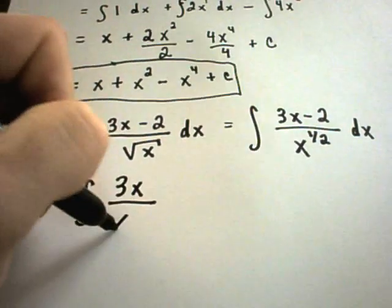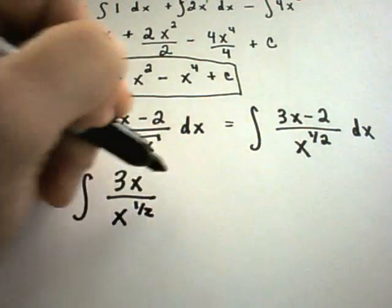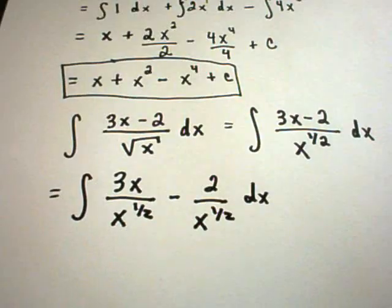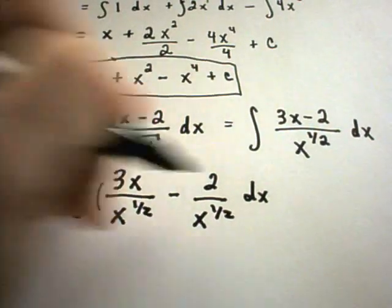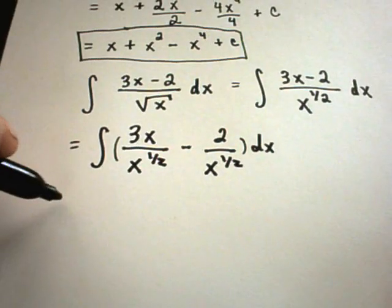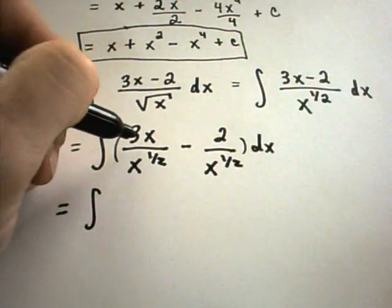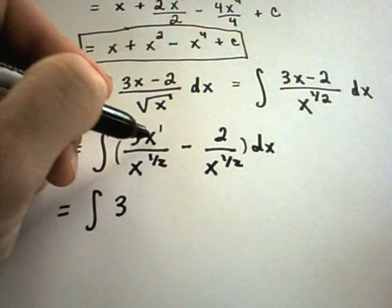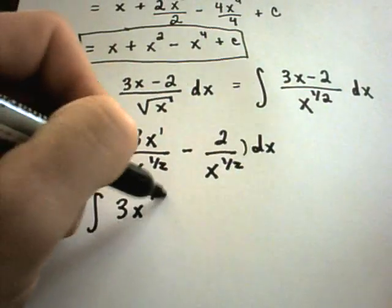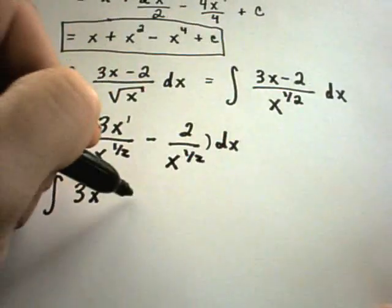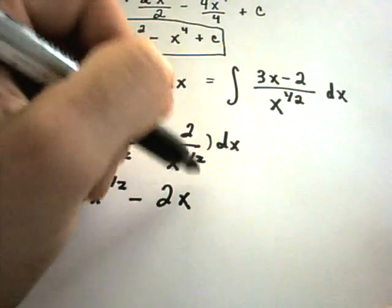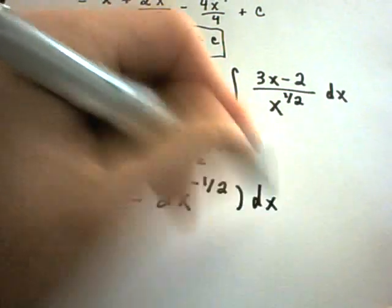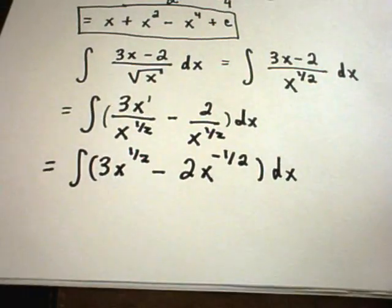What you can do with a little bit of algebra is rewrite it as 3x over x to the one half minus 2 over x to the one half. Simplifying: 3x divided by x to the one half gives 3 times x to the one half in the numerator. Bringing x to the one half from the denominator of the second term gives minus 2 times x to the negative one half. Now this is in a suitable form to integrate.